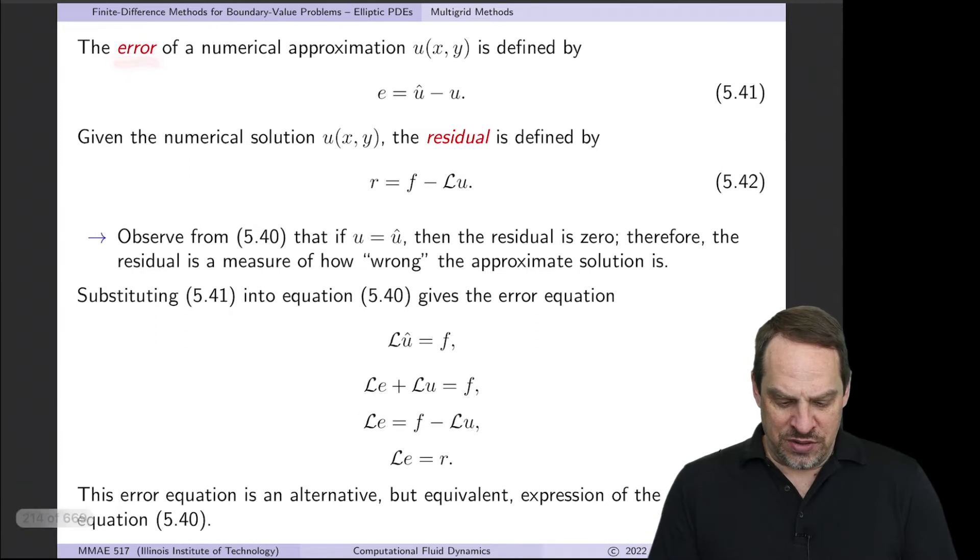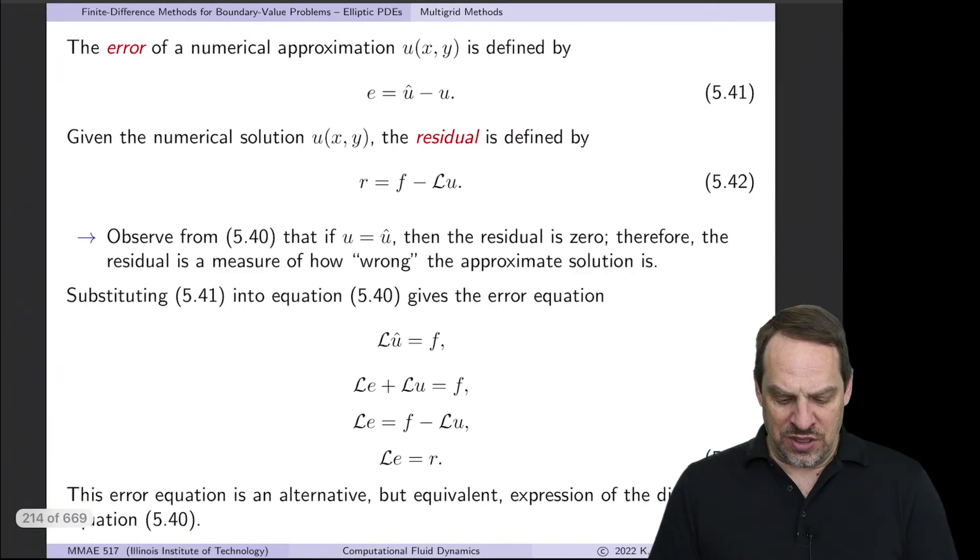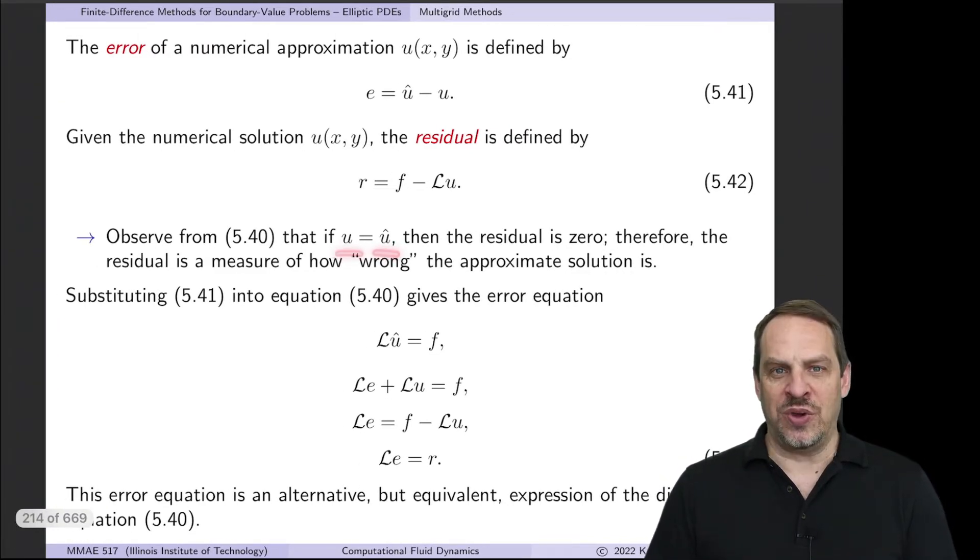Then we can define the error. The error is the difference between the exact solution, u hat, and the numerical solution, u. So we'll call that e for the error. Then the residual, as we've seen before, is just f minus Lu. So for an approximate solution for u, f minus Lu tells us how wrong that solution is. That's the residual for that solution. As always, if u happen to be equal to u hat, the exact solution, then the residual, of course, would be zero.